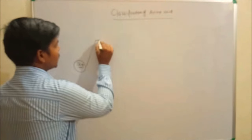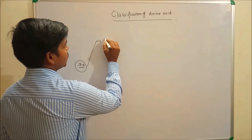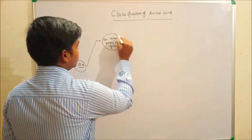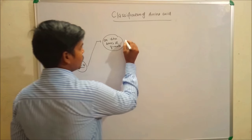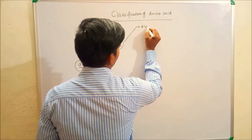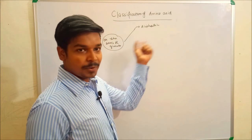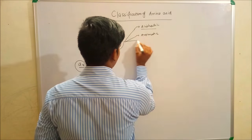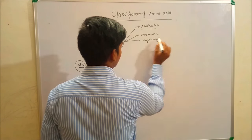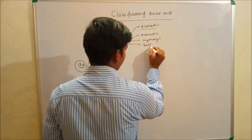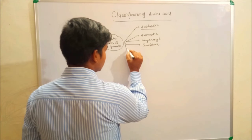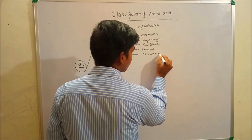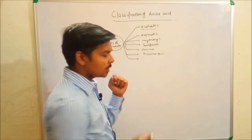We can classify amino acids on the basis of R group. The categories are: aliphatic, aromatic, hydroxyl group, sulfur-containing, amino group, and carboxyl group.